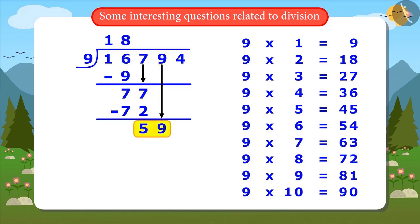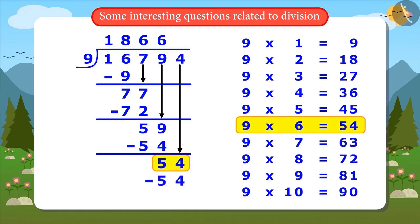And divide 59 by 9. 9 6's are 54. 54 was deducted from 59 and the remaining is 5. Let us also write down 4. Now the number is 54. 9 6's are 54. If we deduct 54 from 54, the remainder is 0. Now the whole number is divided and the answer came 1866.